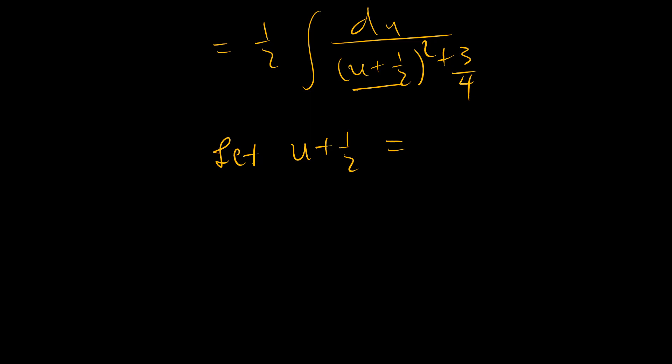So, the tan squared plus 1 is equal to sec squared. And so, let u plus a half be equal to square root of 3 quarters, which is root 3 over 2 tan theta.